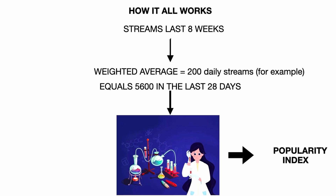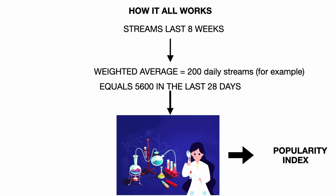So how does the Spotify algorithm work? It computes the streams of the last eight weeks and takes the weighted average. Suppose it is 200 daily streams — that means 5,600 streams in the last 28 days. Many people like to reason in terms of the last 28 days, and this weighted average is given to the magic formula, which produces the popularity index.